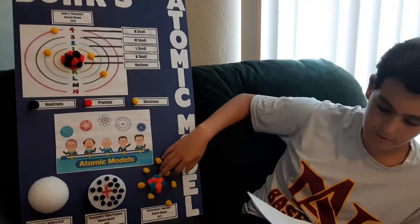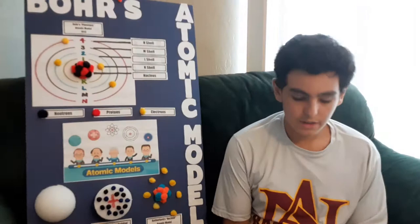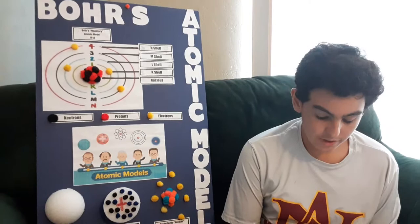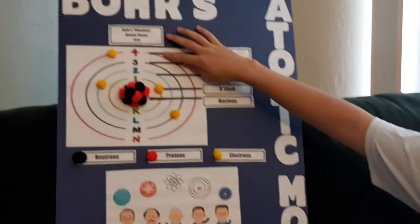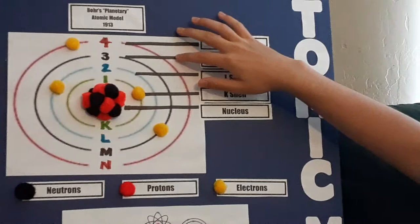Bohr also found out that the amount of electrons that the outer orbit contains determines the properties of the element. For example, if there were 2 electrons in the N shell or the 4th shell, it would be an alkaline earth metal because there are 2 electrons in the outer shell.